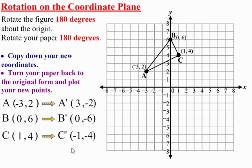And then plot your new prime points. You have 3, negative 2 down here for A prime, and label it A prime as soon as you put that point down.